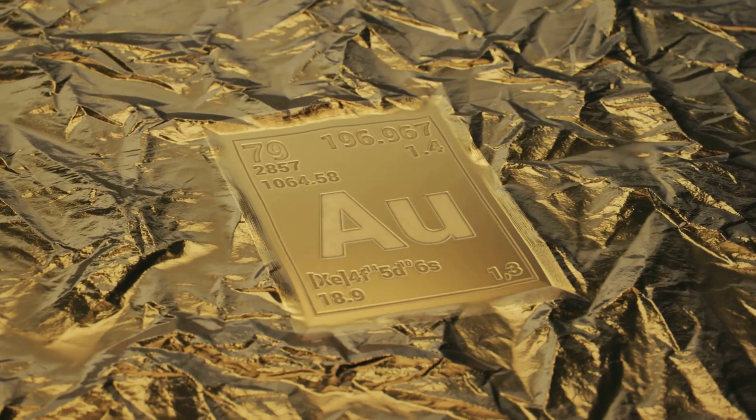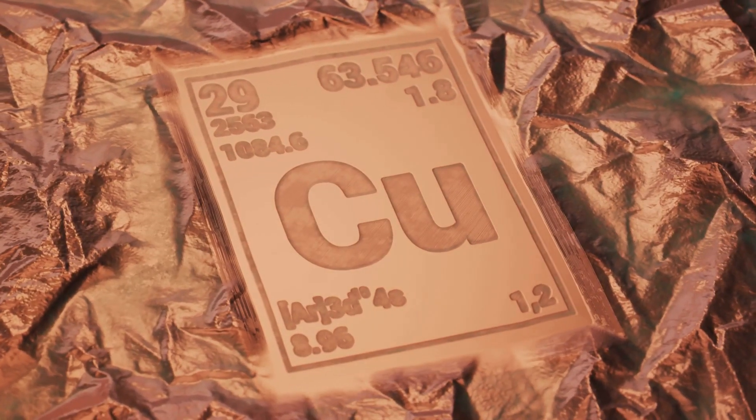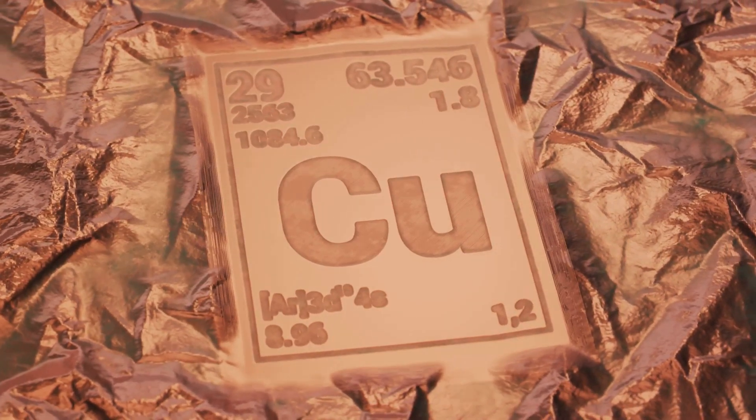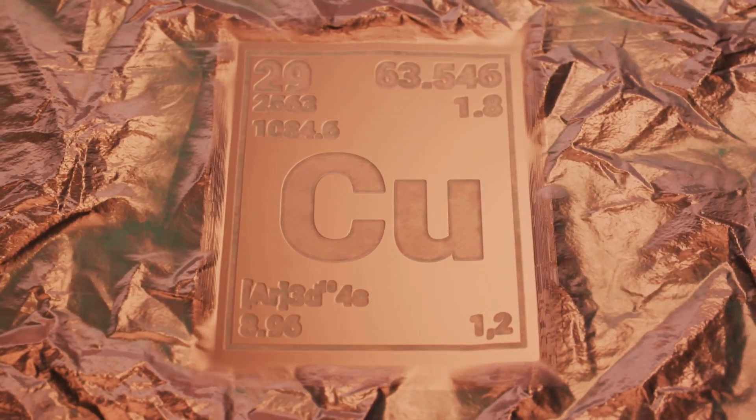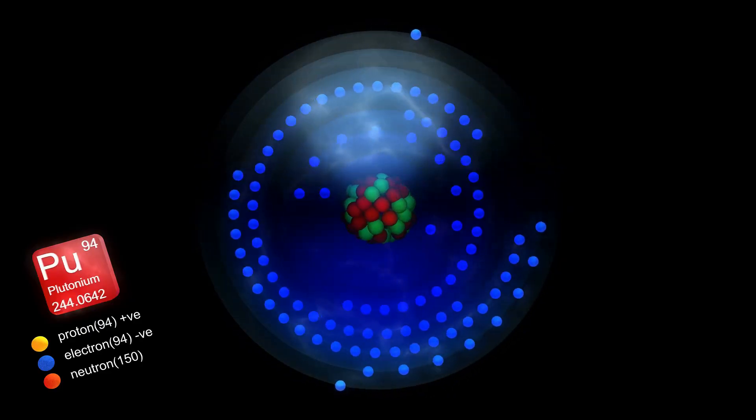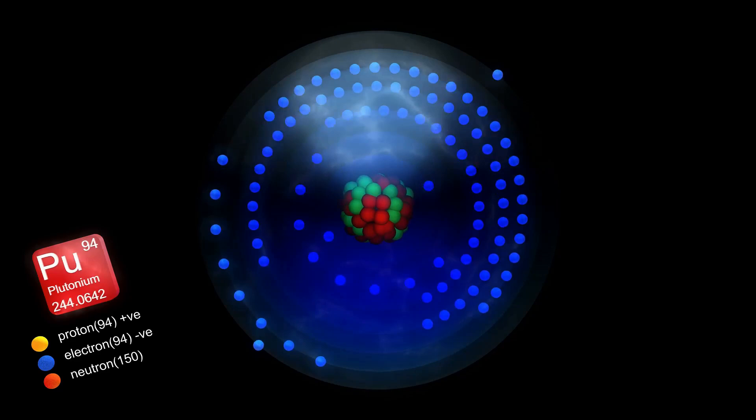So, what exactly is plutonium? On the periodic table, its symbol is Pu, and it has an atomic number of 94. That means every single atom of plutonium has 94 protons packed into its nucleus.